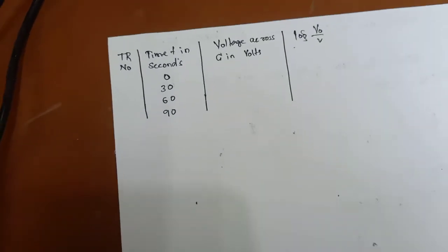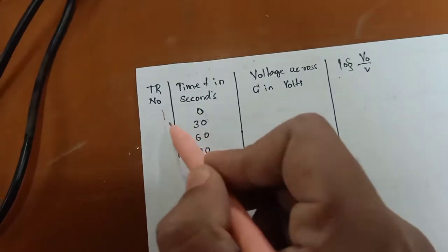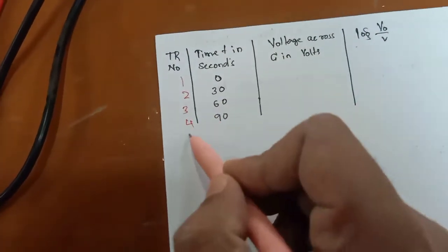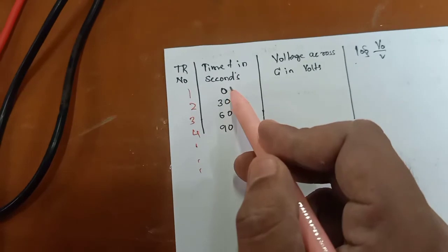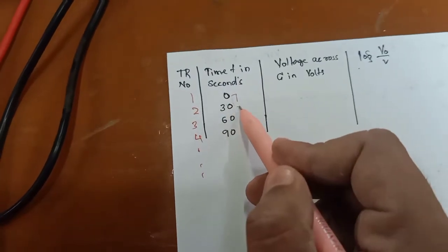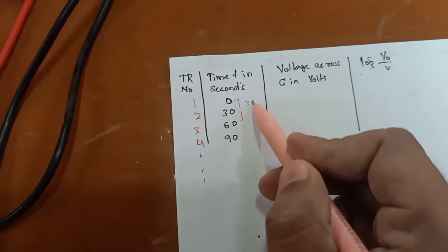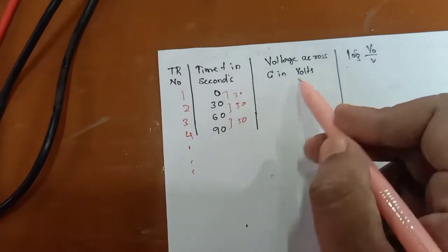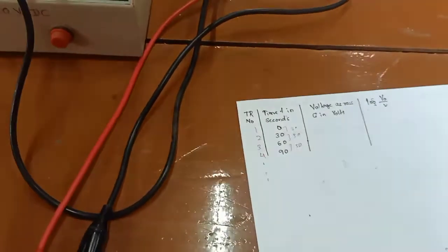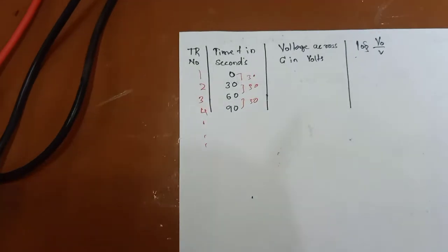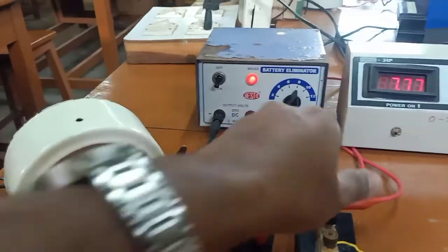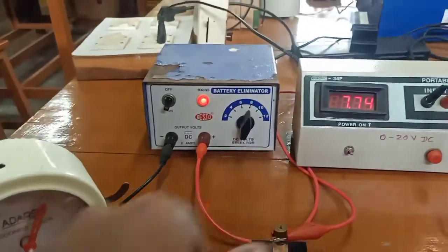Here I am taking trail numbers: trial 1, trial 2, trial 3, trial 4, and so on, at every 30-second interval. So from 0 to 30 seconds, then 30 seconds, and 30 seconds — I am recording how much voltage the voltmeter is showing. Now I will turn on the setup and make it discharge.